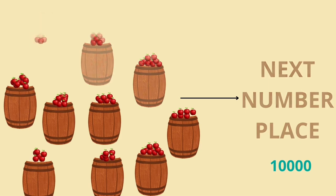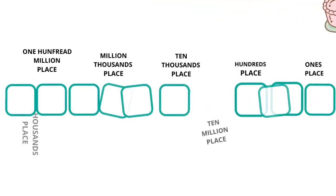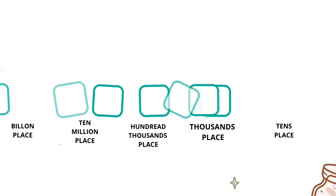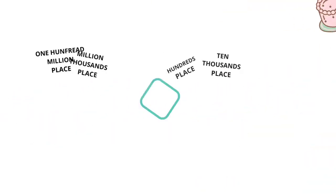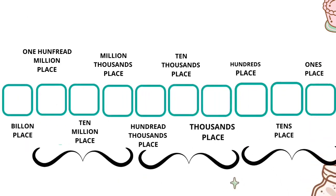When we get a lot of number places next to each other, it can be hard to quickly recognize which place is which. That's why many countries use some kind of separator between every three places to make them easier to keep track of. For example, in the US we use a comma between every three number places.